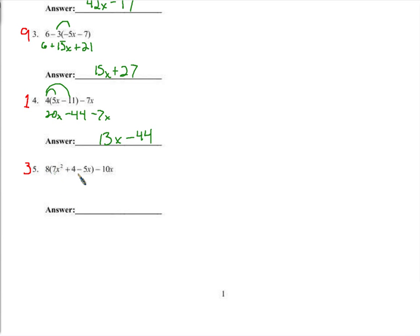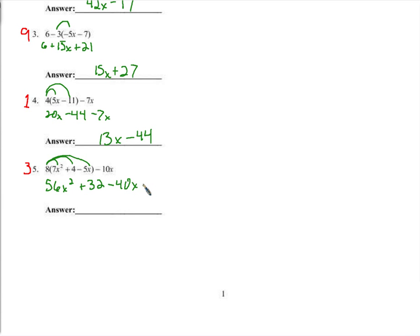Now we're distributing to three terms inside the parentheses, so we just distribute to all three of them. Eight times 7x squared is 56x squared, plus eight times four is 32. Positive times a negative is going to be negative 40x minus 10x.